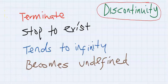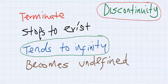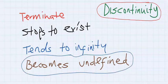Discontinuity in function simply means a function terminates, or stops to exist. Or tends to infinity, or becomes undefined.